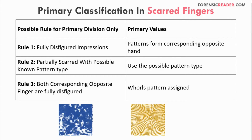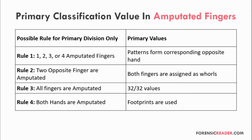Rule three for scarred fingers: both corresponding opposite fingers are fully disfigured. If both the right thumb and the left thumb have fully disfigured patterns, then both are numbered as whorls. So the right thumb value is counted as a whorl and the left thumb value also comes to be a whorl.